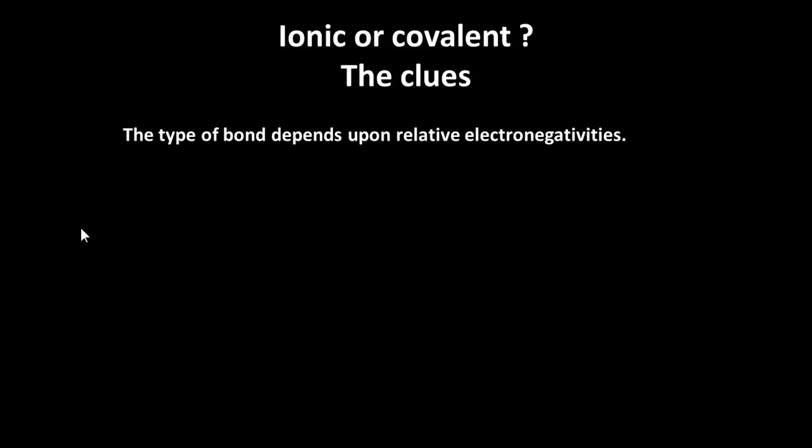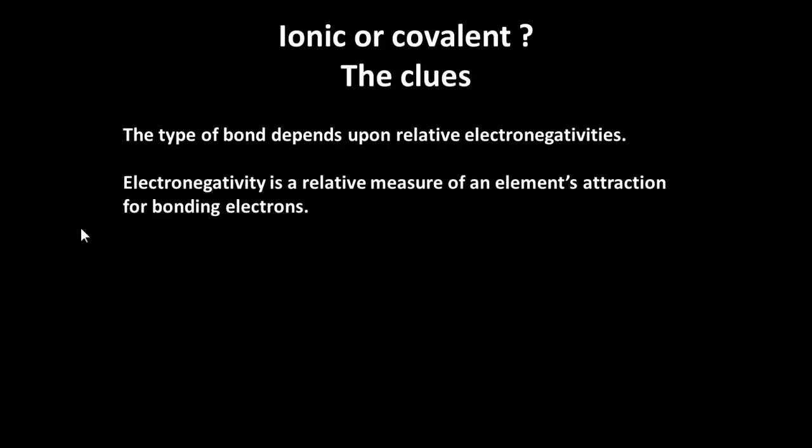So how do we know whether we're dealing with an ionic or covalent compound? What are the clues here? Well, the type actually depends on something called electronegativity, which is a measure of an element's attraction for bonding electrons. And it's a relative scale. There are no actual units.